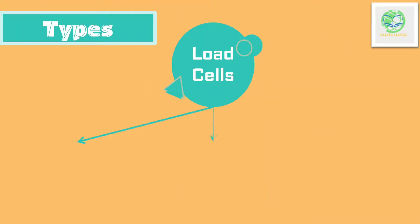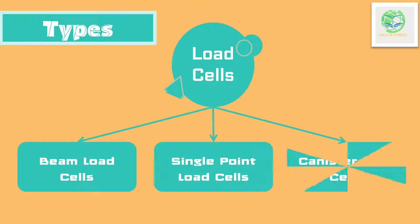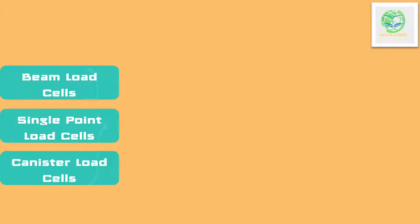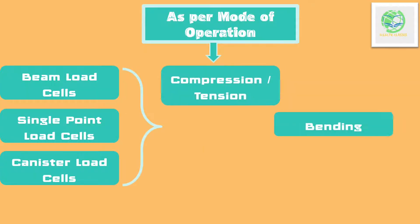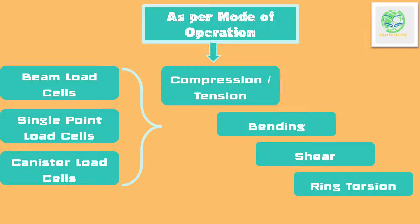Strain gauge load cells are divided into three categories: beam, single point, and canister type. These three can be further subdivided as per the mode of operation into four categories: compression or tension, bending, shear, and ring torsion. This way, we may end up with a dozen types of load cells by combining construction and mode of operation.